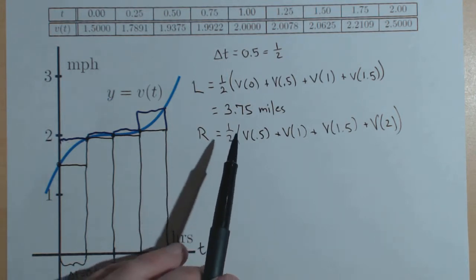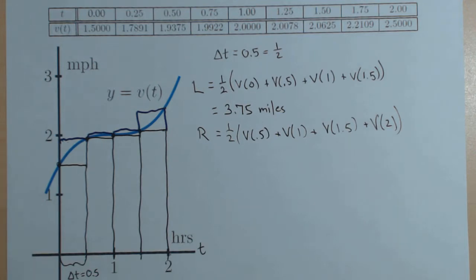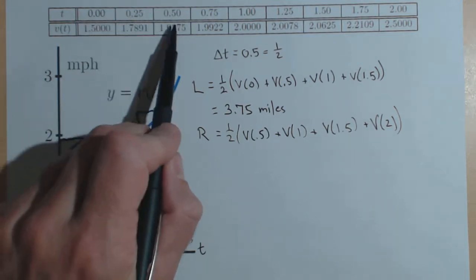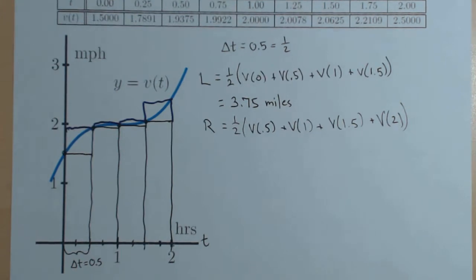How can we get a better estimate than even just estimating between 0 and 2? We can use more rectangles. Notice we have the data to go with a delta-t of 0.25.